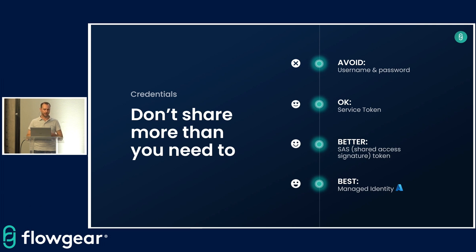A variation is something called a shared access signature. When you have multiple things that need to access the same resource, you can have a different type of token for each consumer so you can tell consumer one apart from consumer two. That's good practice because it shows up in your access logs and you can take decisions based on that. Probably the best option available is to just not have to store any credential at all.